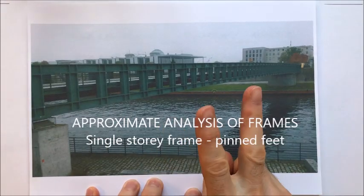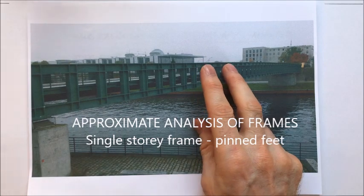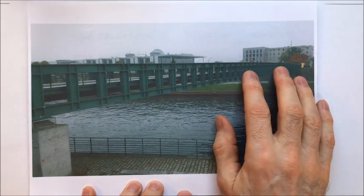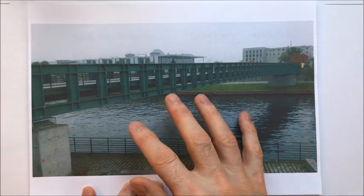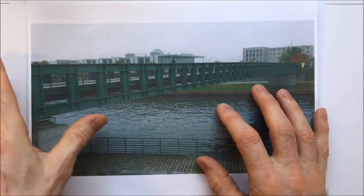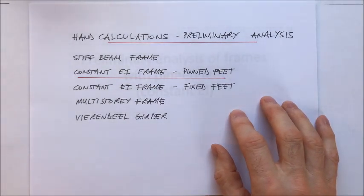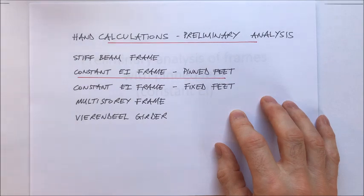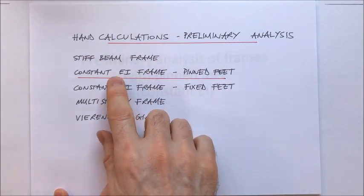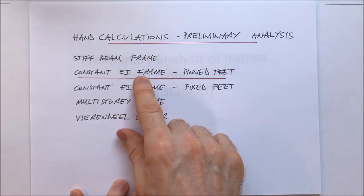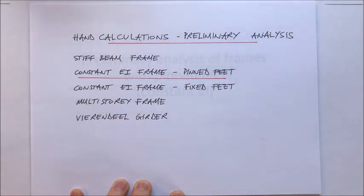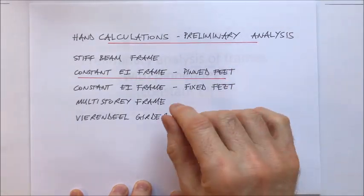Hello again. This is the second video in a series on hand calculations for framed structures and Vierendeel girders. This video will only really make sense if you've watched the previous video. The aim is to get you to carry out approximate analyses of a multi-story frame. This video is going to be on a constant EI frame with pinned feet, meaning each member of the frame has similar levels of stiffness, and we'll look at a one-bay affair first.